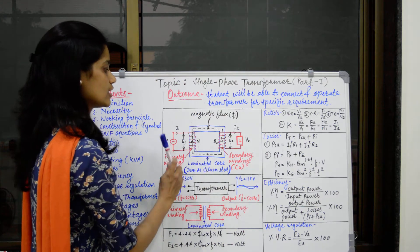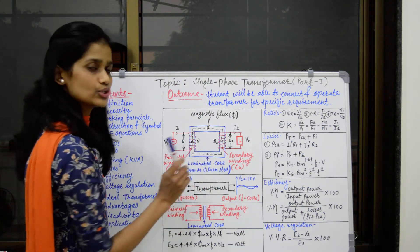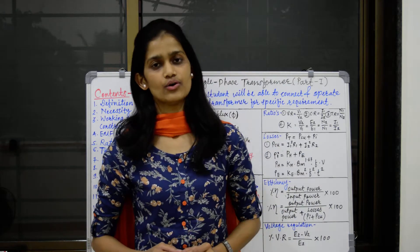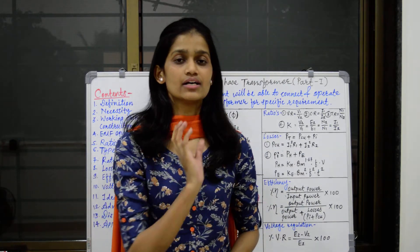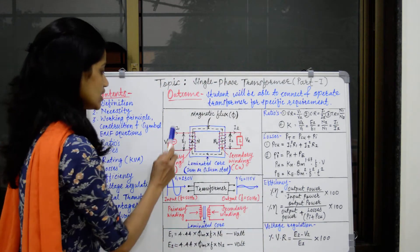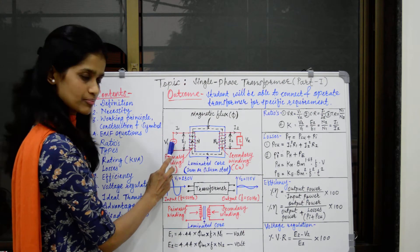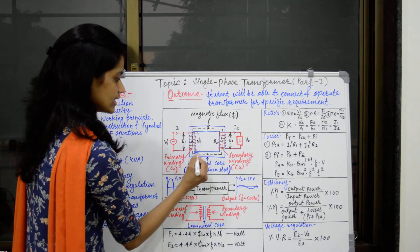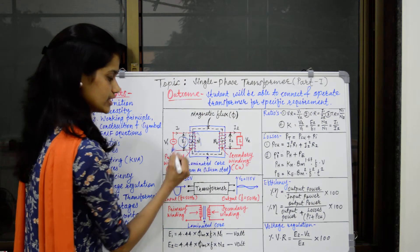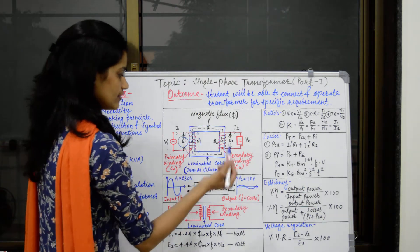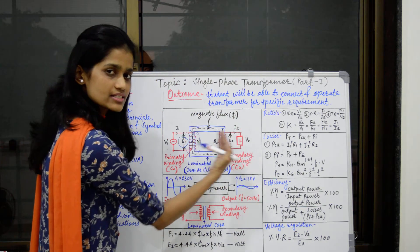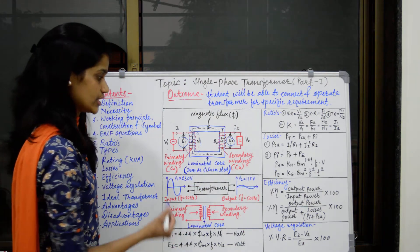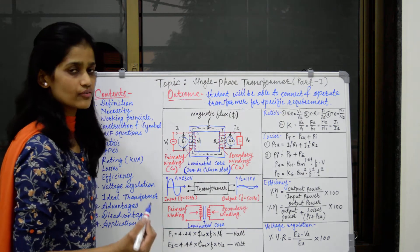These two windings are wound on the laminated core on separate two limbs. The transformer works on Faraday's law of electromagnetic induction, and specifically mutual induction. When we connect the primary winding to the AC supply, AC current will start flowing through this winding. An AC flux gets generated and we get one EMF called self-induced EMF. Most of this flux then links to the secondary side from the primary side, and we get a second induced EMF which is called mutually induced EMF.